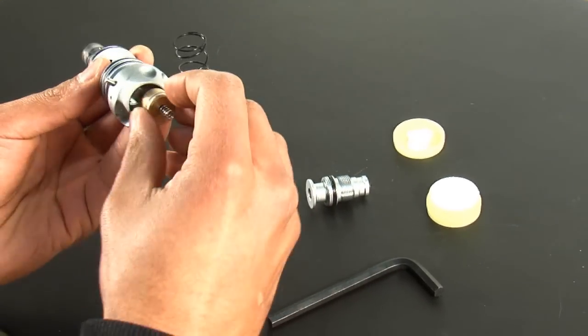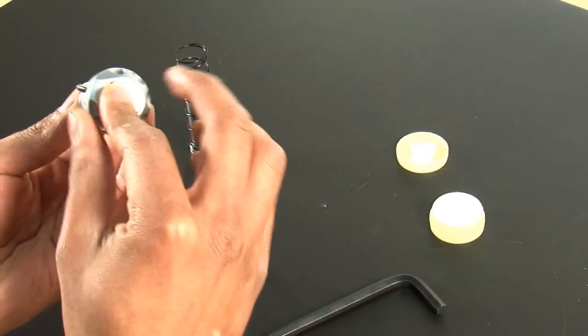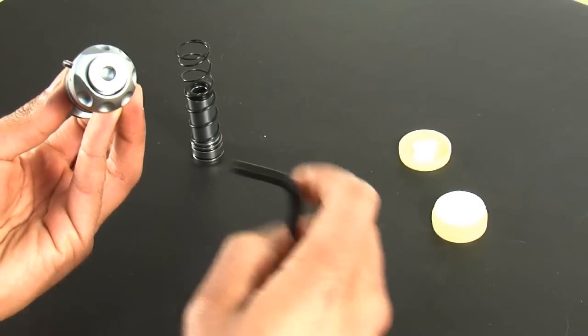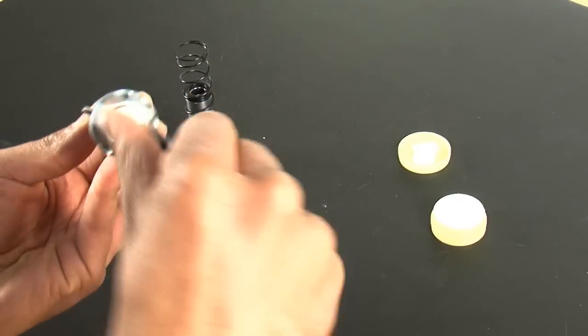Then you're just going to drop it back into your bolt guide. Take your back cap, put it back in place. Take your quarter inch hex key and screw it back in.